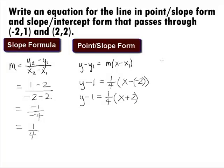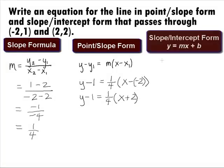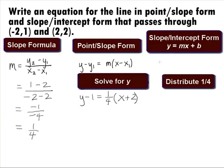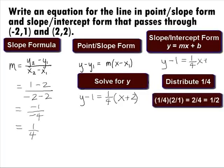Next, we want to write the equation in slope intercept form, which is y equal to mx plus b. This means we want to solve this equation for y. Distributing the 1 fourth through the parentheses, we get y minus 1 equal to 1 fourth x plus, and 2 over 4 would simplify to be 1 half.